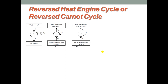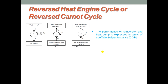The adjective 'reversed' means operating backward. The direction of heat and work interactions is opposite to that of the heat engine. These machines are used to remove heat from a body at low temperature and transfer it to another body at high temperature. When the main purpose of the machine is to remove heat from the low temperature body, we call it a refrigerator. If the purpose is heat supplied to the high temperature body, then we call it a heat pump.